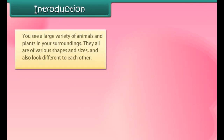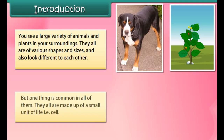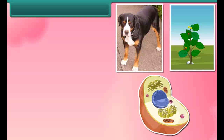You see a large variety of animals and plants in your surroundings. They are all of various shapes and sizes and also look different from each other. But one thing is common in all of them — they are all made up of a small unit of life, that is the cell. In this module we are going to learn about the cell and its structure.